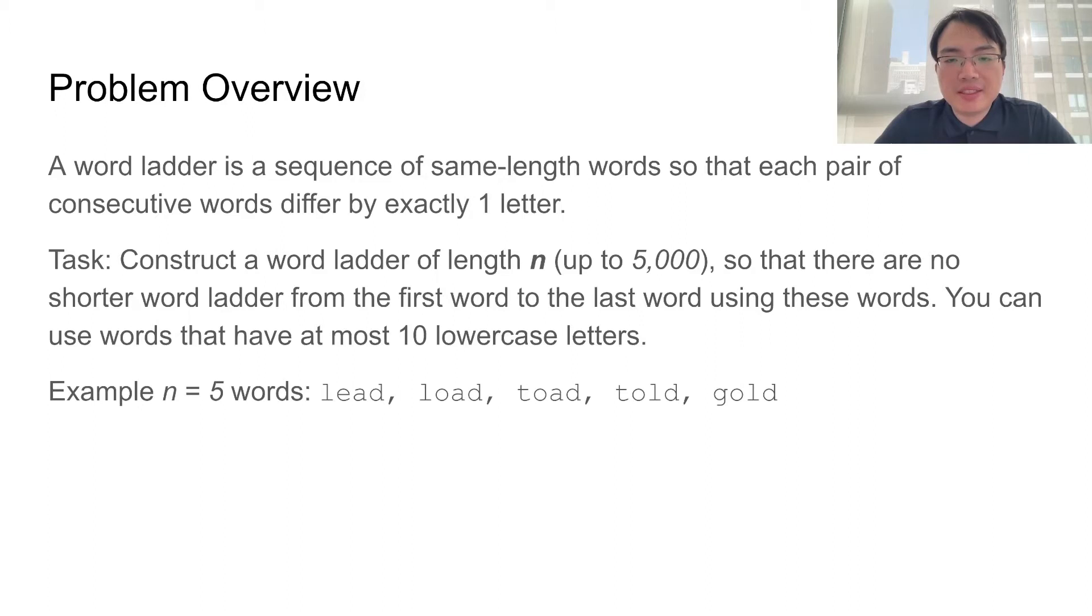This means we want to find n words. The requirement is that from our first word to our last word, there should exist no shorter word ladder other than the ladder that uses all of our words. You can choose words that have at most 10 lowercase letters. In the example of n equals 5, an answer is provided in the sample.